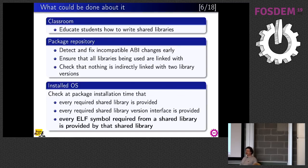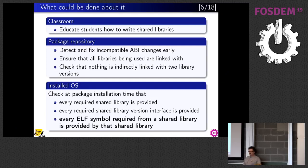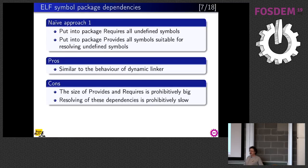The repository defense line is not enough, so we have to implement probably the last line of defense in the dependency solver. It should at least ensure that every library required is provided by something, and every library interface is provided. Nowadays most repositories implement dependencies on libraries and on library interfaces, but the one thing implemented only in our repository is checking that every ELF symbol required from a shared library is actually provided by that library. This is called set versions.